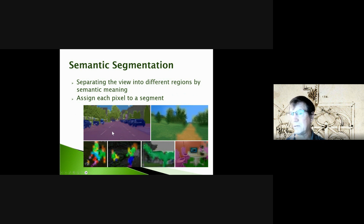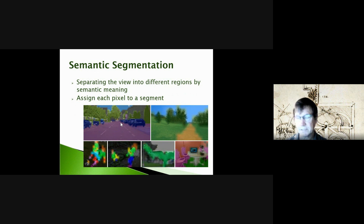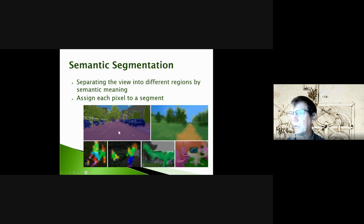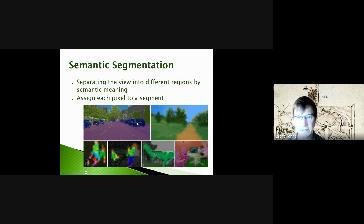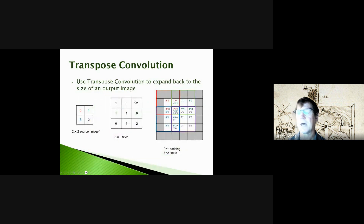The algorithm doesn't inherently understand the meaning of pavement, but in constructing the segmentation process and labeling things for training, we understand that road pavement means something different from lane markings, which means something different from cars. That's why we call it semantic segmentation.